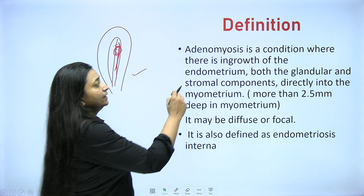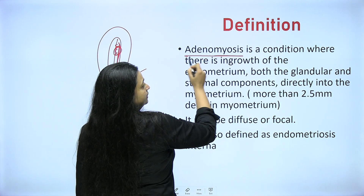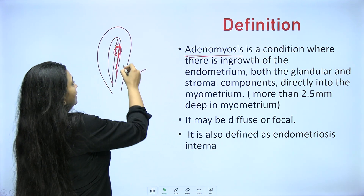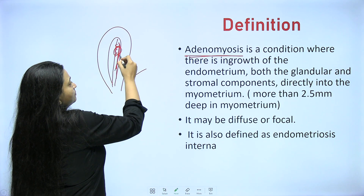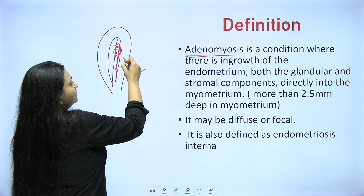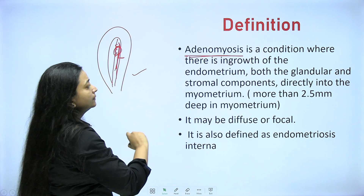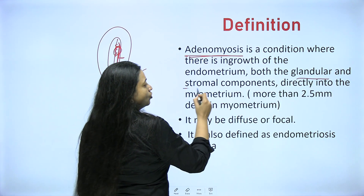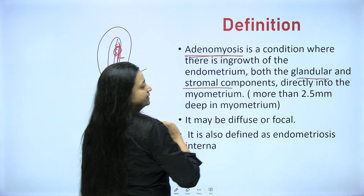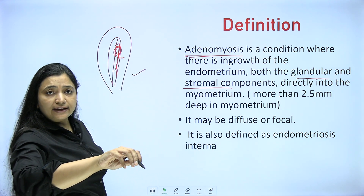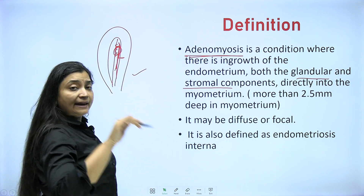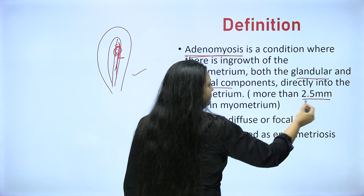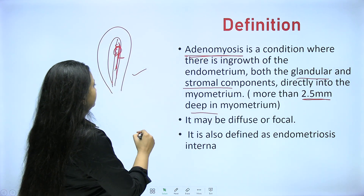Today, adenomyosis. Adenomyosis is a condition where there is ingrowth. Ingrowth means this functional and basal layer grows inside. Both the glandular and stromal components directly go inside the myometrium and get embedded there, more than 2.5 mm deep inside the myometrium.